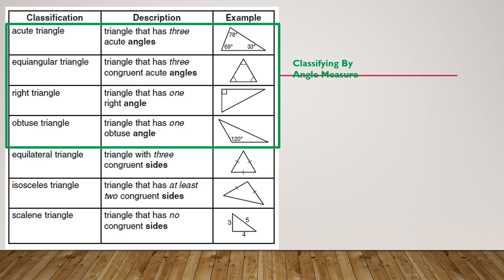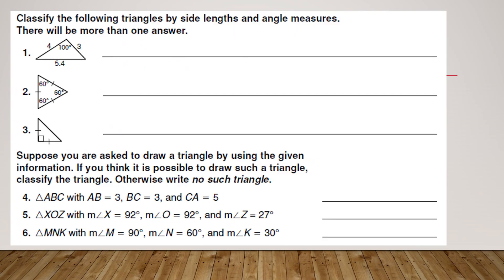To classify by angle measure, that's the top four. And to classify by side measure, it's the bottom three. It's just you being able to identify what they are. Here we go.